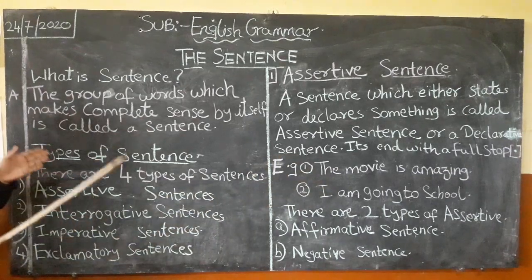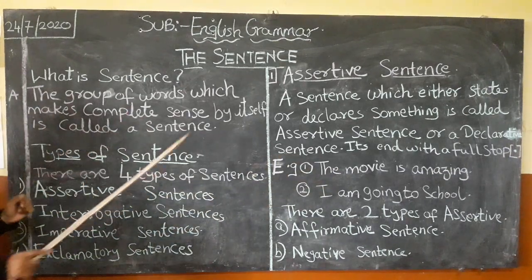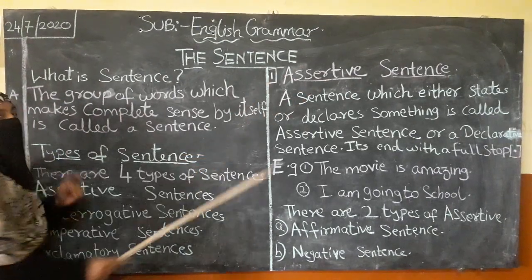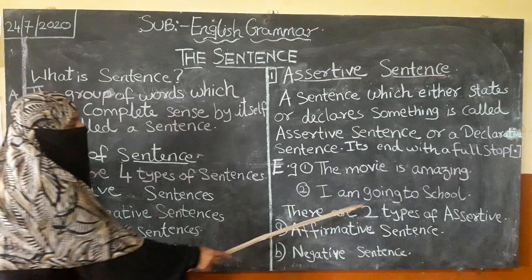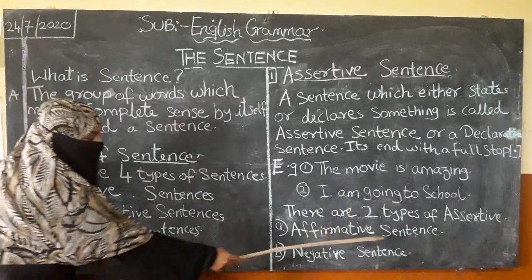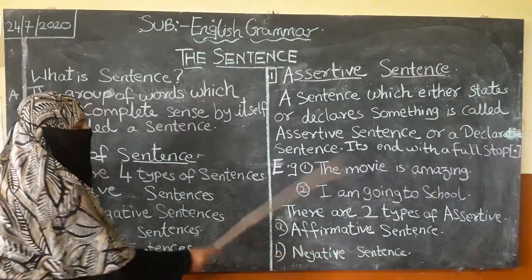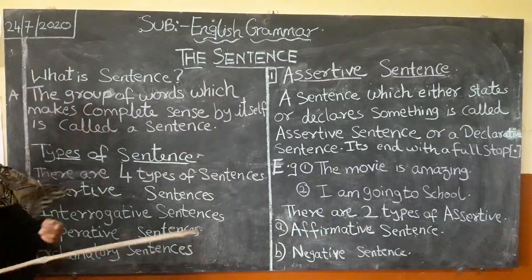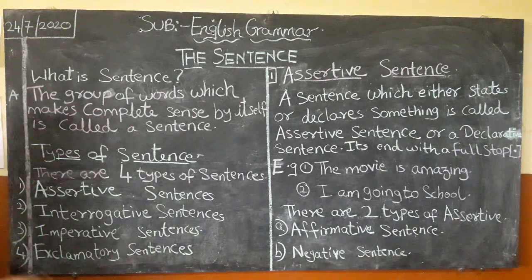I hope you understood what an assertive sentence is. Under the assertive sentence there are two types: first is the affirmative sentence, and second is the negative sentence. We will now learn what an affirmative sentence and a negative sentence are.